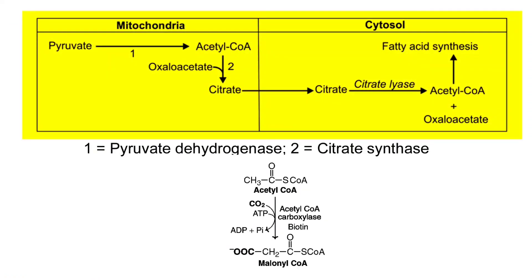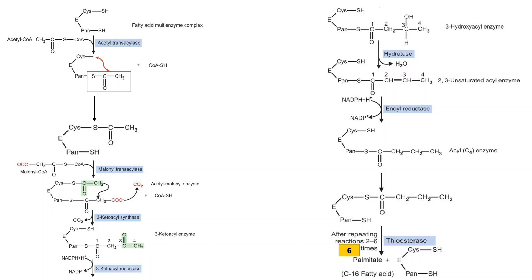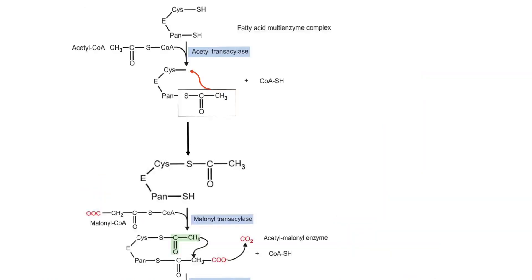So acetyl-CoA is transported from the mitochondria into the cytosol, then converted into malonyl-CoA by acetyl-CoA carboxylase. Next are the actual reactions of fatty acid synthesis involving the multi-enzyme fatty acid synthase complex, which includes elongation and release of fatty acid. In the first reaction, a molecule of acetyl-CoA is attached to the ACP of the fatty acid synthase complex, catalyzed by acetyltransacylase, forming acetyl-ACP.